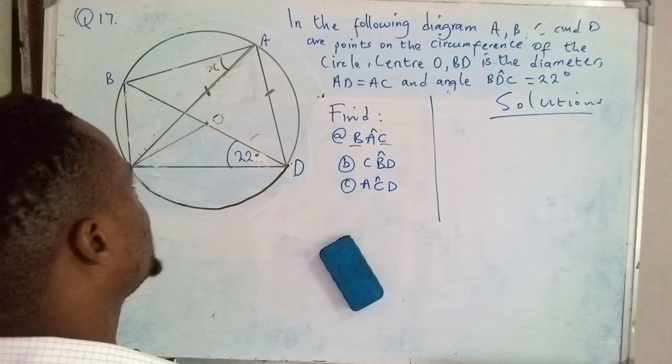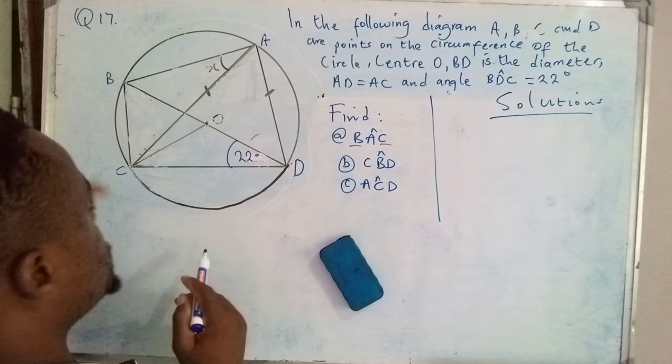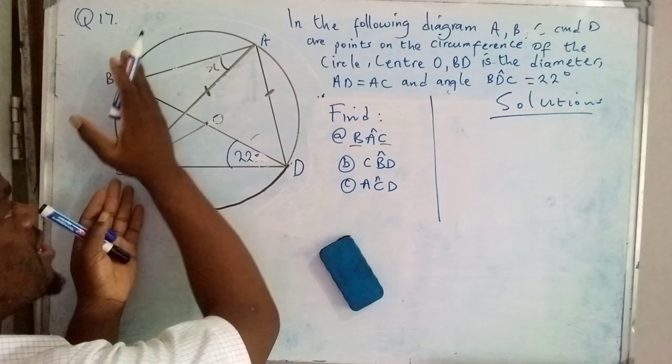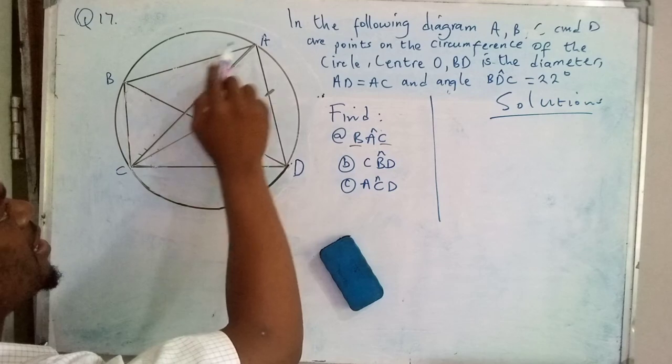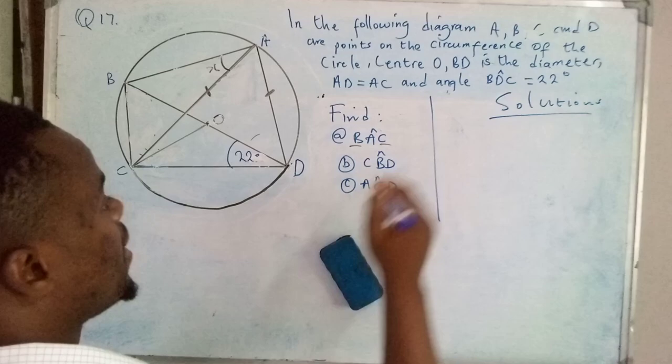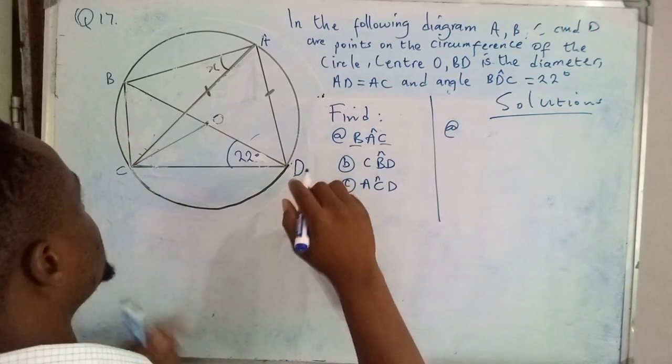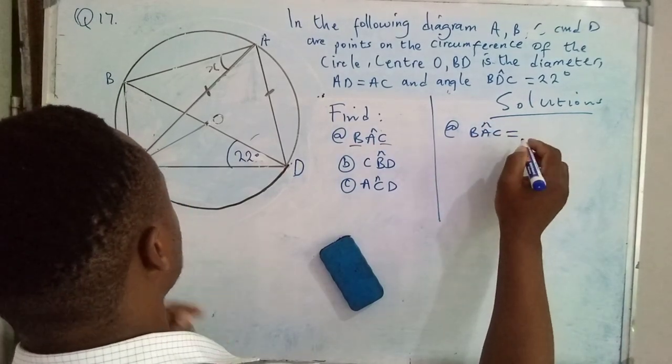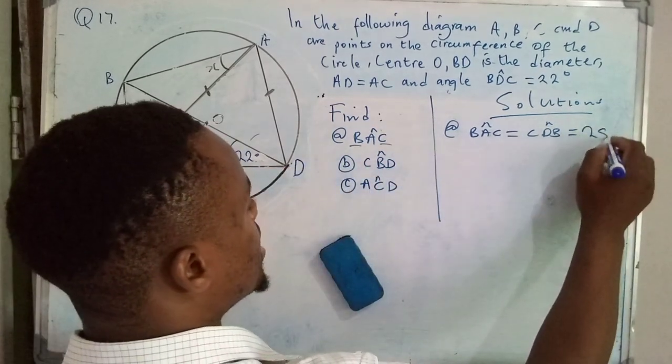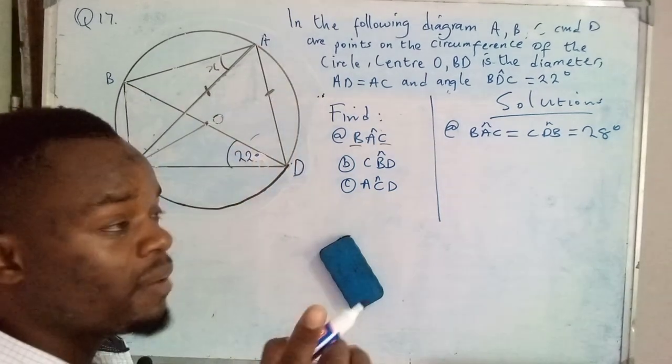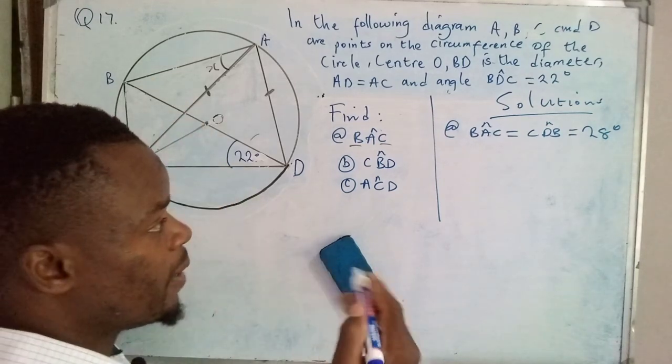The first property is that angles subtended by the same chord—this line drawn touching the circumference at two different points—in the same segment are equal. So angle BAC is equal to angle BDC, which is equal to 22 degrees. This angle is equal to that angle because angles subtended into the same segment by the same chord are equal.